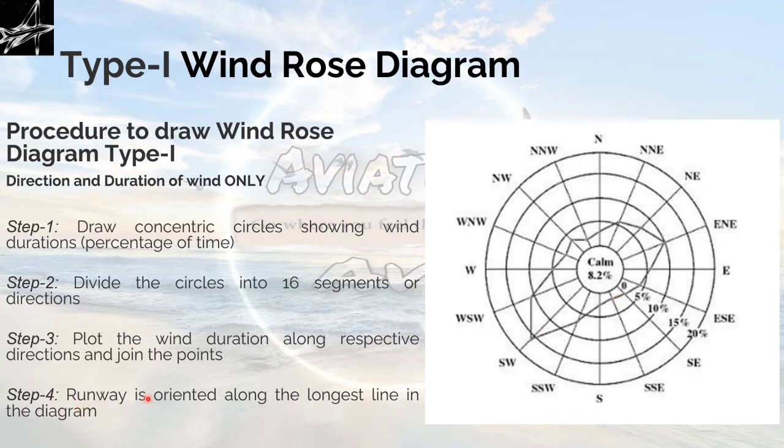Step 4: the runway is oriented along the longest line in the diagram. In this contour, we could find two lines as the longest. One moving from east-north-east to west-south-west, and the second one is north-east to south-west. Whichever will be the longest line will orient the runway along that direction. This is how, by following the procedure of wind rose diagram type 1, we orient the runway.